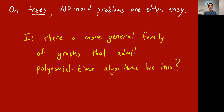That's an indication that on trees, many NP-hard problems are actually easy — solvable in polynomial time. What we'd like to explore today is this question: is there some more general family than just trees that admits polynomial-time algorithms like this for NP-hard problems?